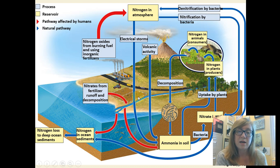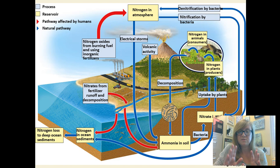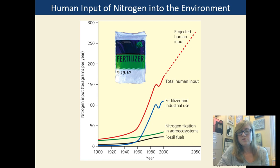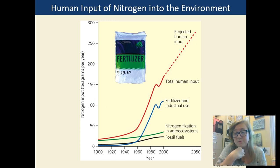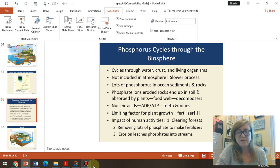Looking at the nitrogen cycle diagram: electricity and bacteria change N2 into usable ammonia, which gets nitrified so plants can take it up. Plants get eaten, they die, bacteria turn it back to ammonia, or waste adds nitrogen back in. On the human side: fertilizer on farms can run off, and burning fossil fuels adds nitrogen oxides to the atmosphere. Fertilizer use has gone up and up over time because there are more people on Earth needing more food.